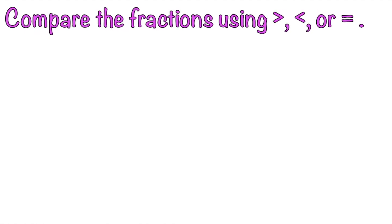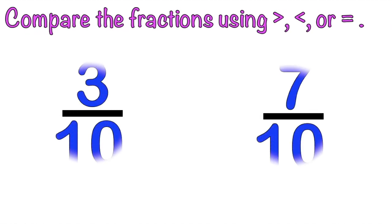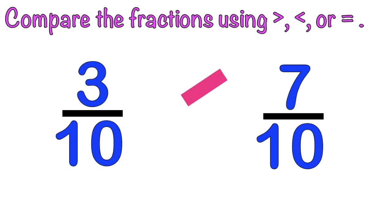Let's compare the fractions using greater than, less than, or equal symbol. Let's have the first one: 3-tenths and 7-tenths. That's correct! It's less than. So, 3-tenths is less than 7-tenths. Because 7 is bigger than 3.